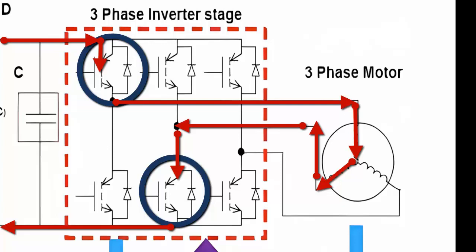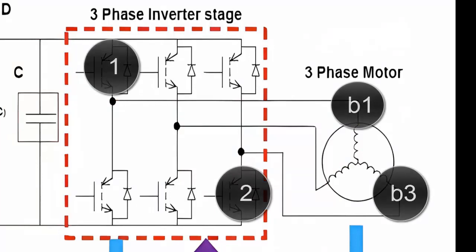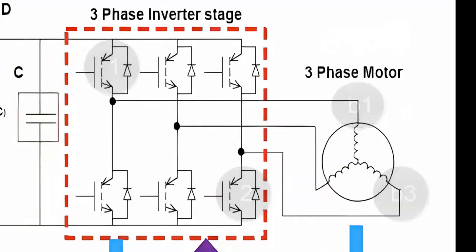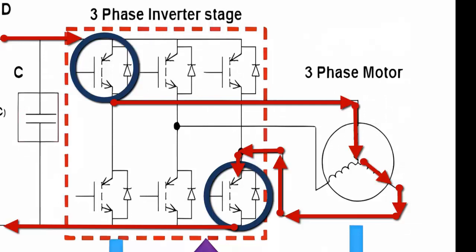Strategy 2: By activating transistor 1 to allow the current flow to coil 1, it is necessary to simultaneously activate transistor 2, enabling the current to exit through coil 3.